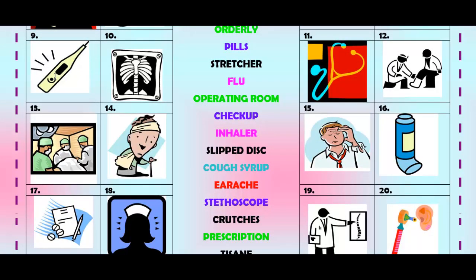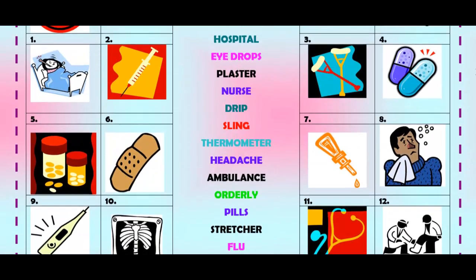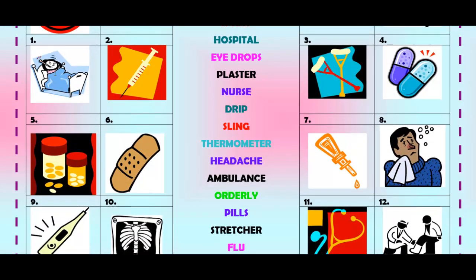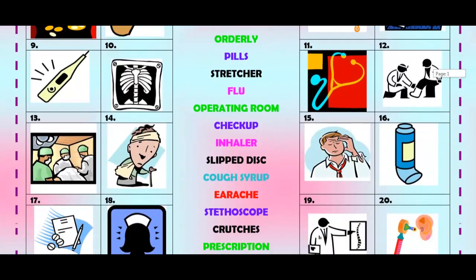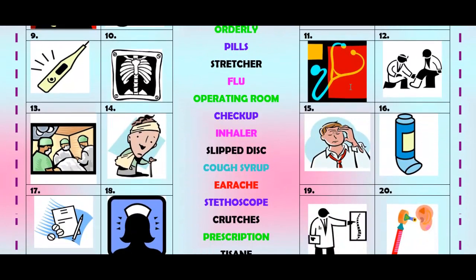Number thirteen — it's a thermometer. You use this when you have a temperature or a fever — also called a fever. Number fourteen — this is an x-ray.